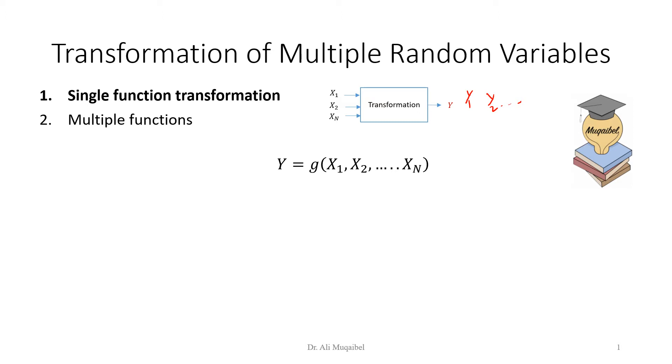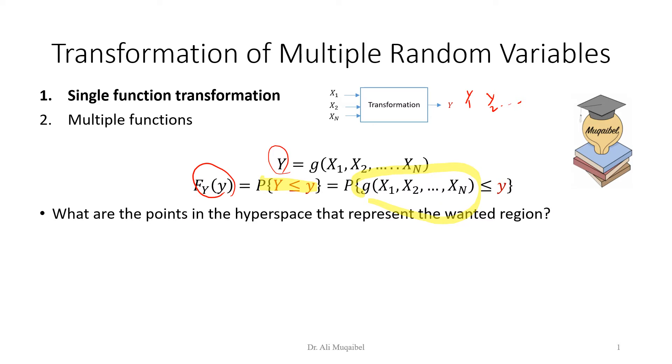The general form for the output, y, is a function that operates on x. So we have y equal to g, the function of x1, x2, up to xn. If you think about the CDF, the CDF, the output as function of the input, we start with the CDF because it's related to the probability. The probability that y is less than or equal to a given quantity. If y is less than a given quantity, this should correspond to a certain region on x that will result on this y. So we need to know what is this region. What are the points in the hyperspace that represent the wanted region? What values of x result in y less than a given value?